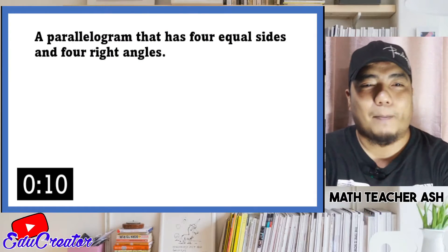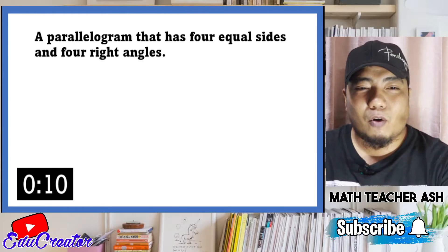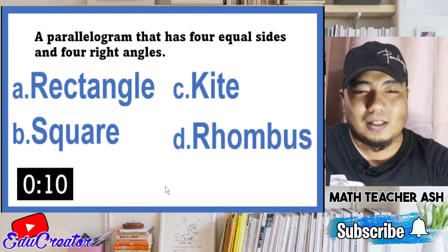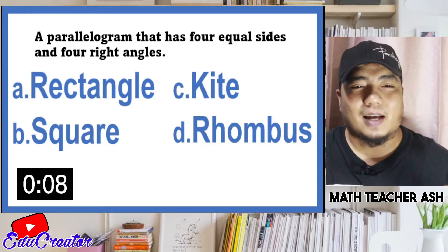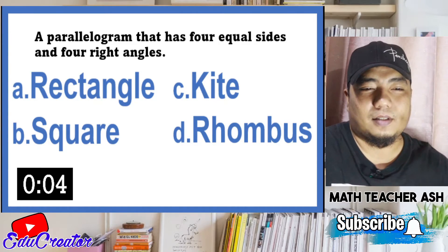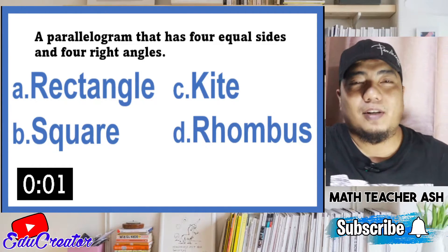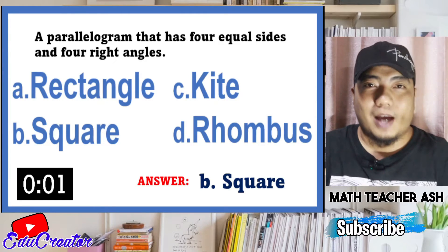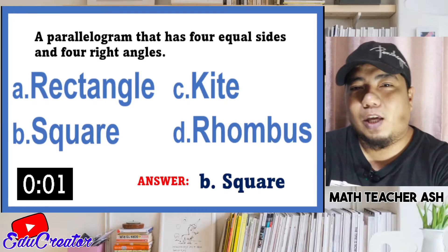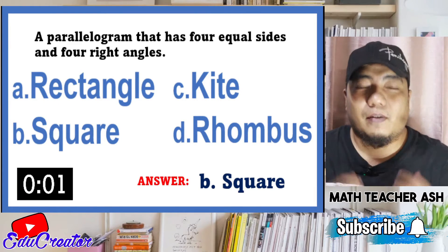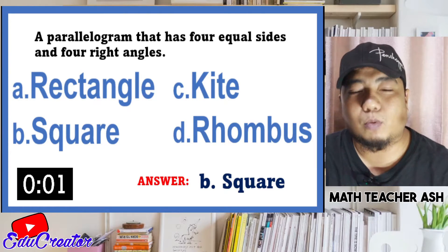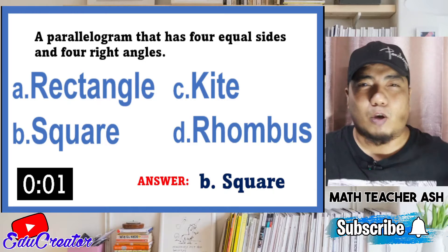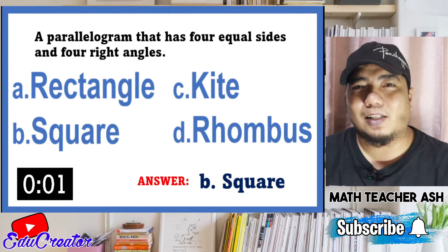Here is the first question: a parallelogram that has four equal sides and four right angles — what do you call that one? Is it A) rectangle, B) square, C) kite, or D) rhombus? The correct answer is letter B, square. By definition, a square has four equal sides and four right angles. If it is only focused on four equal sides, that is a rhombus. If it is only focused on four right angles, that is a rectangle. But combining both — four equal sides and four right angles — you have a square.